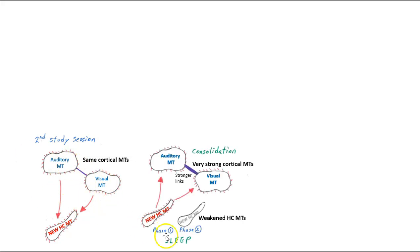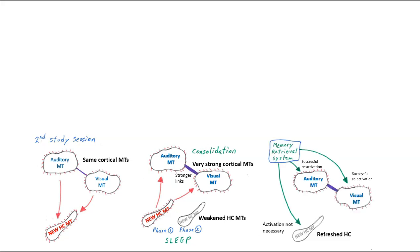Then we go to sleep again. The new hippocampal memory trace is reactivated and replayed, so now we can strengthen the cortical memory traces even more and connect them together even stronger. We're starting to build very strong cortical memory traces. Then we weaken those new hippocampal memory traces again in preparation for new learning. As a result of two study sessions, we have good strong cortical memory traces that can be accessed and retrieved by the cortical memory systems without the need of the hippocampus.